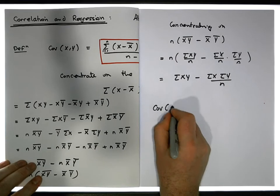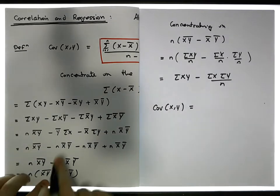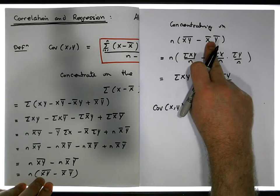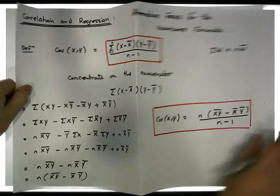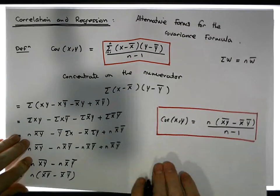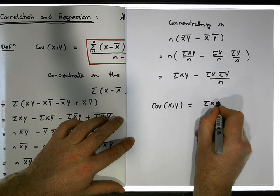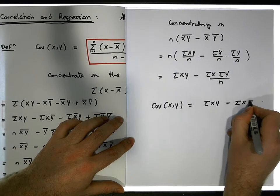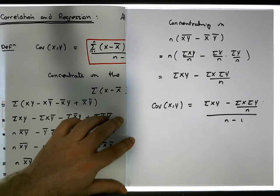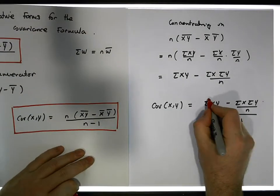From this, the covariance of x and y can also be written as: the summation of the cross products changes to the sum of the x y's minus the sum of the x's times the sum of the y's, all over n — all divided by n minus one. People might recognize that particular formula from before.